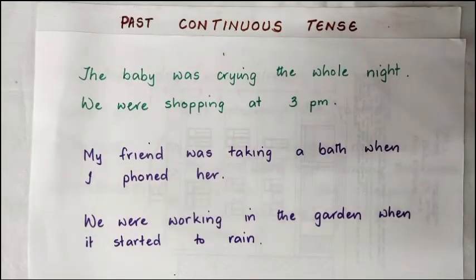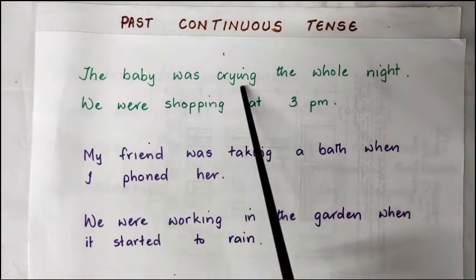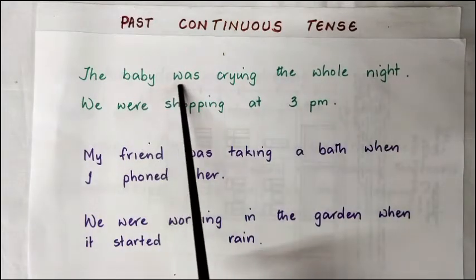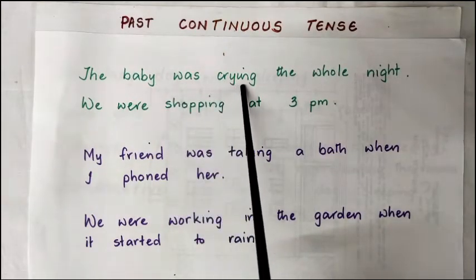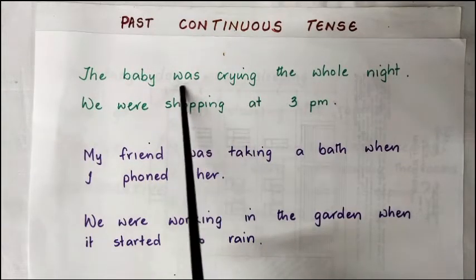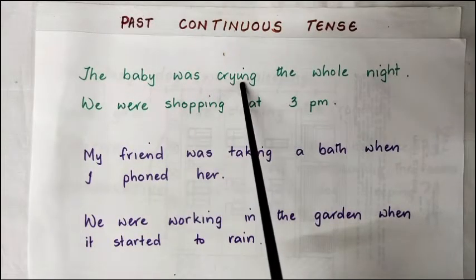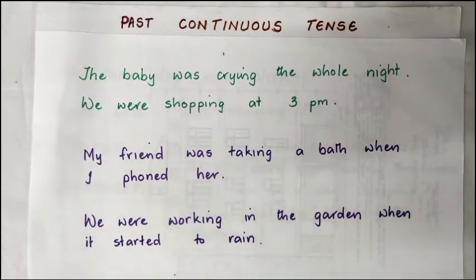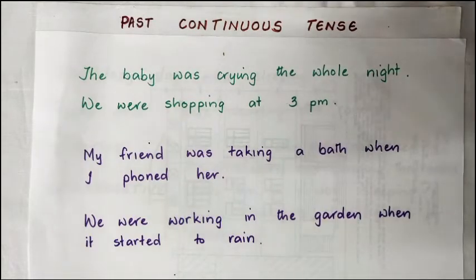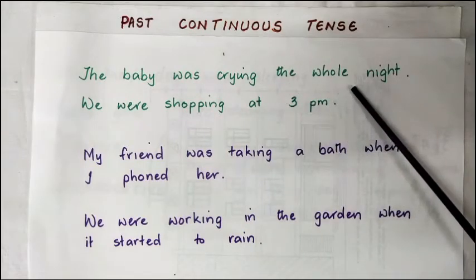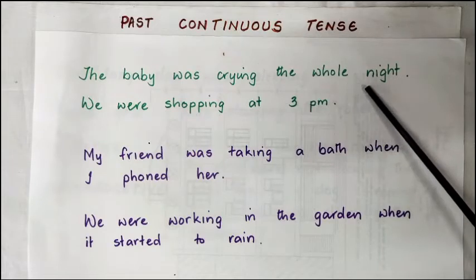Let us look at some more examples. 'The baby was crying the whole night.' 'Was crying' is the past continuous — these two verbs make it into the past continuous tense. 'Was' because 'baby' is singular, and 'crying' is the main verb with the -ing. In this sentence, we have used the verb to express something that happened during a period of time. The period of time here is the whole night.